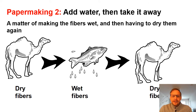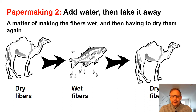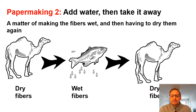Likewise, you will notice that we add water in the process at the beginning in the aqueous suspension in the slurry, but then in the drying process we take water out, and this is how the fibers bond together in the paper material. This is a very unique process that has been around for thousands of years yet remains the same since the very beginning.